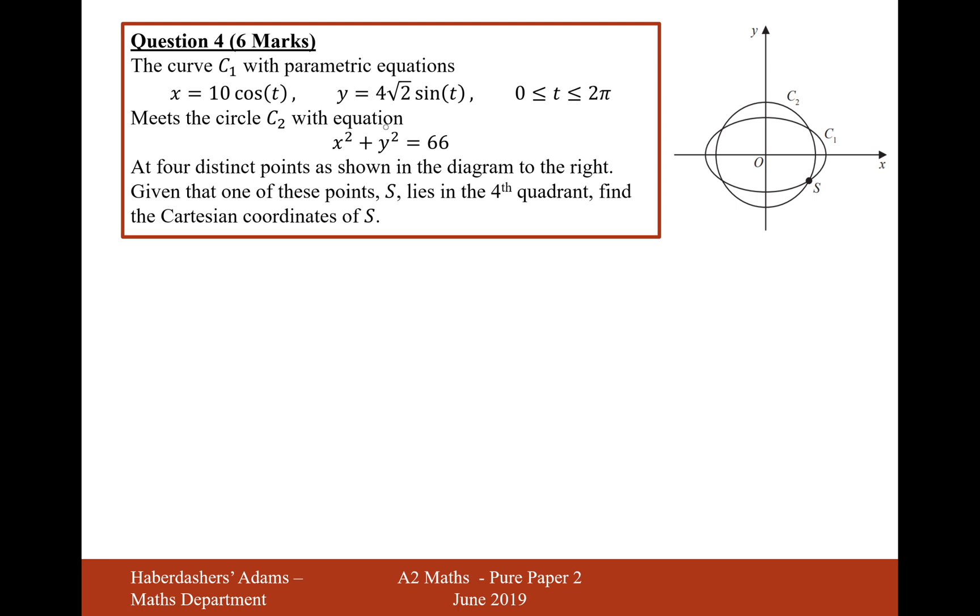It meets the circle C2 with equation x squared plus y squared equals 66 at four distinct points as shown on the diagram to the right. Given that one of these points, s, lies in the fourth quadrant, find the Cartesian coordinate of s.